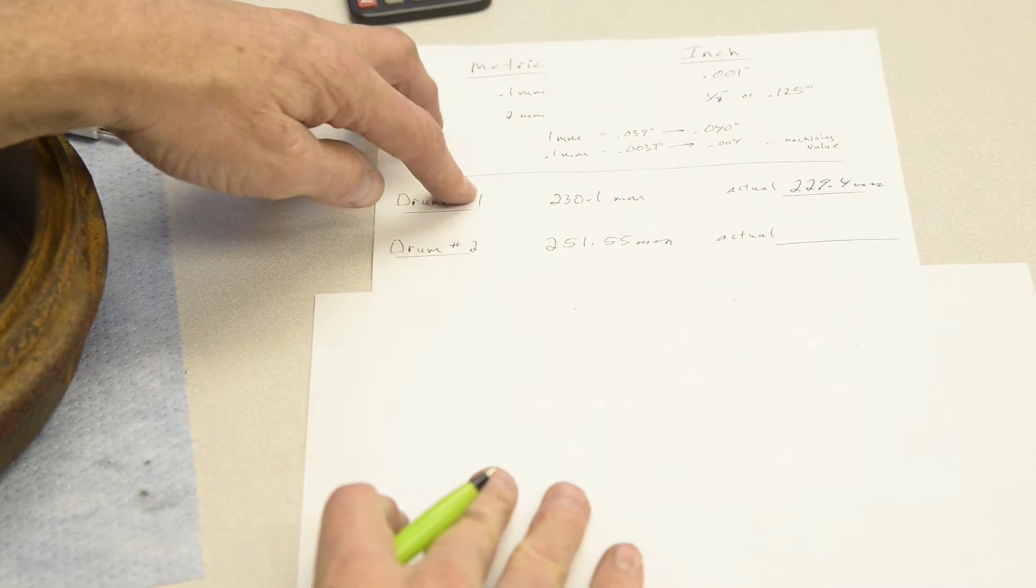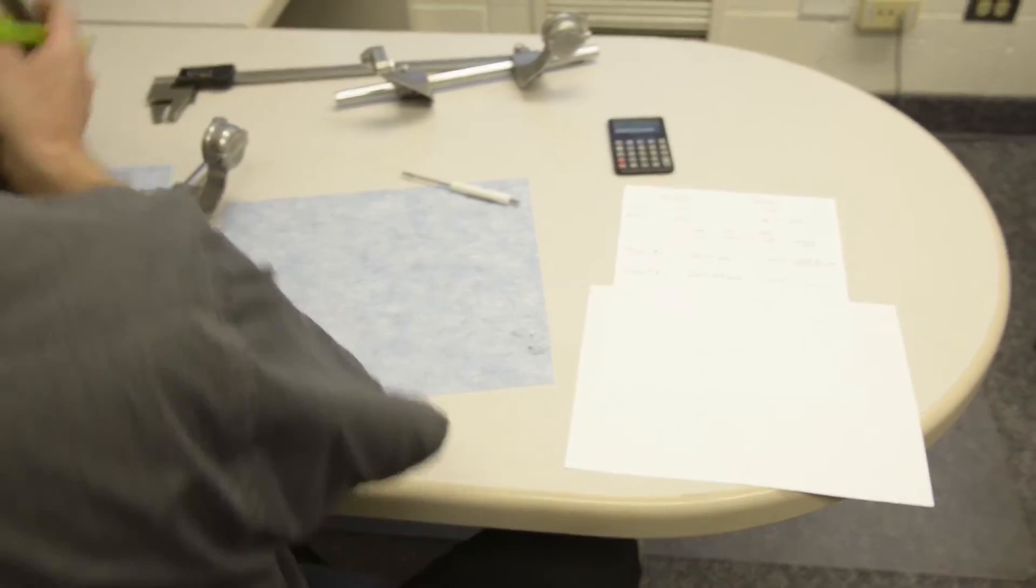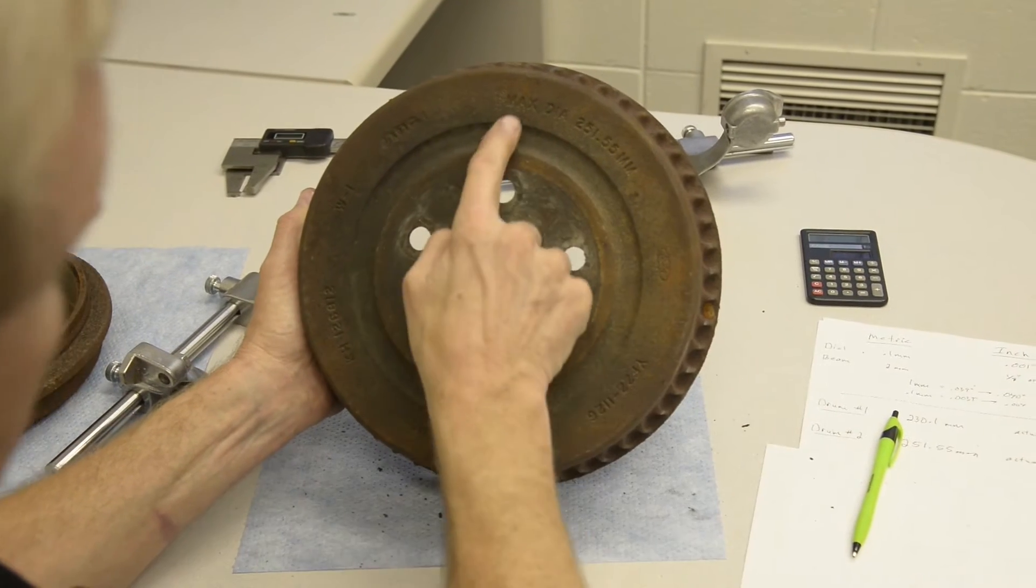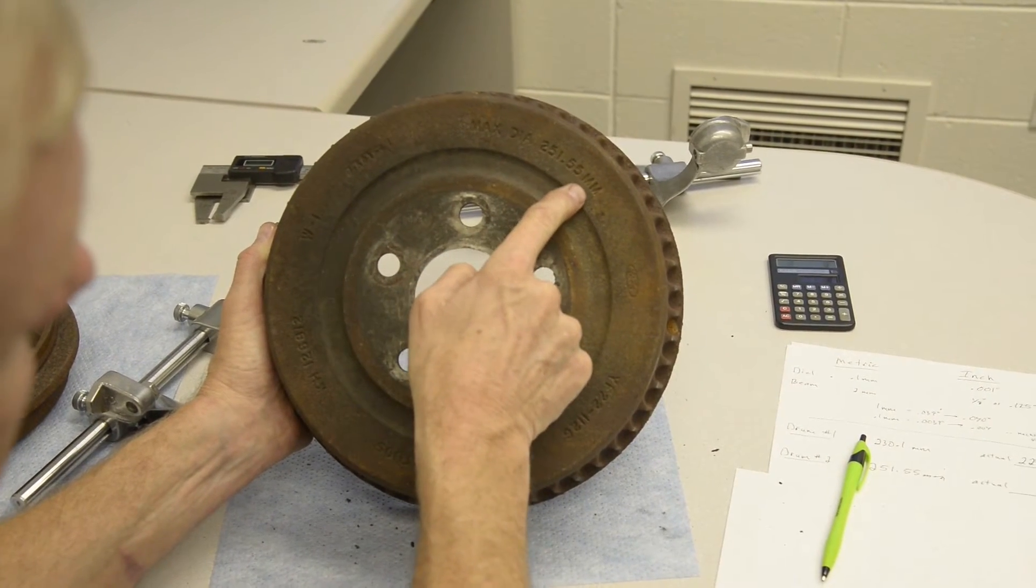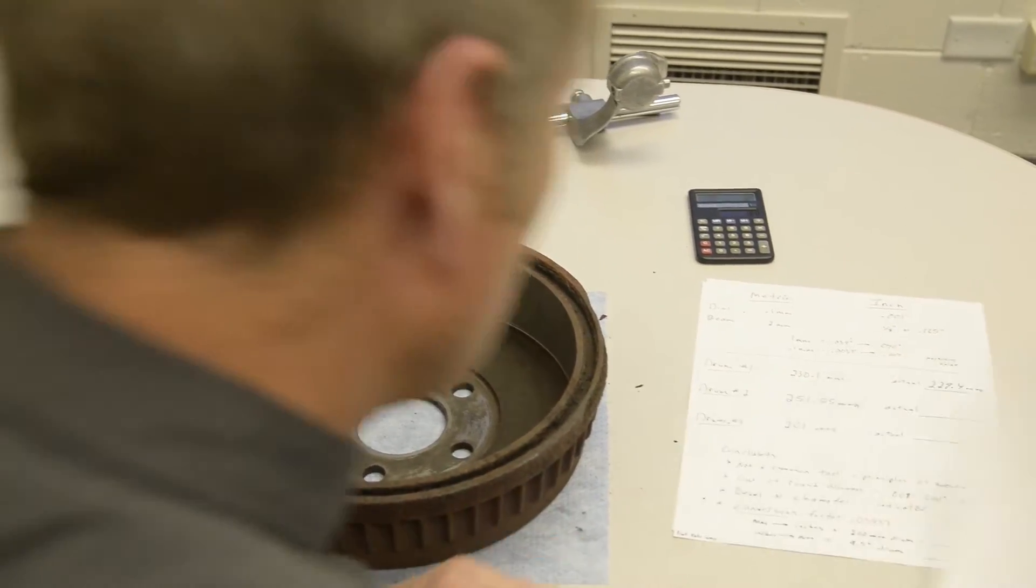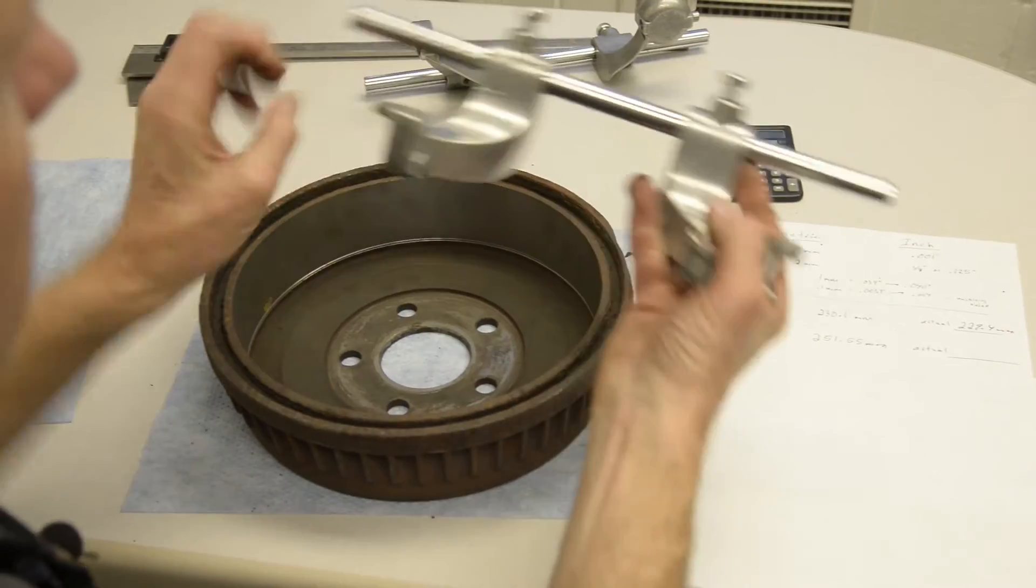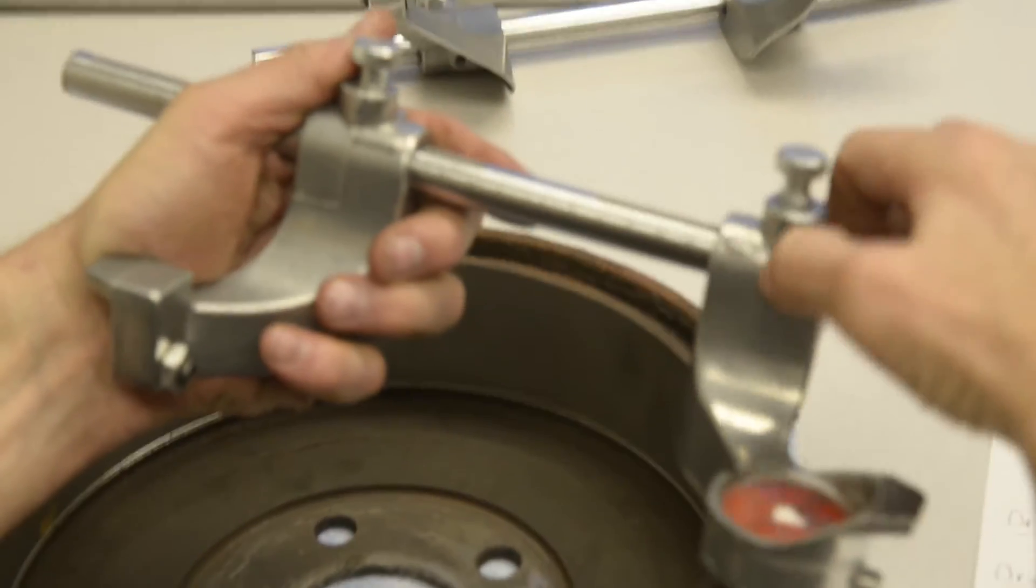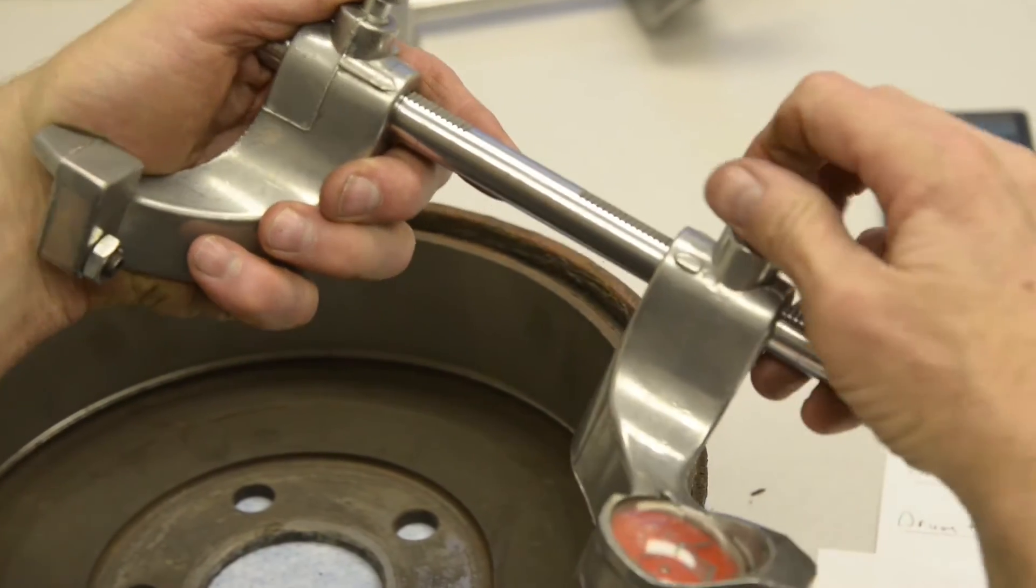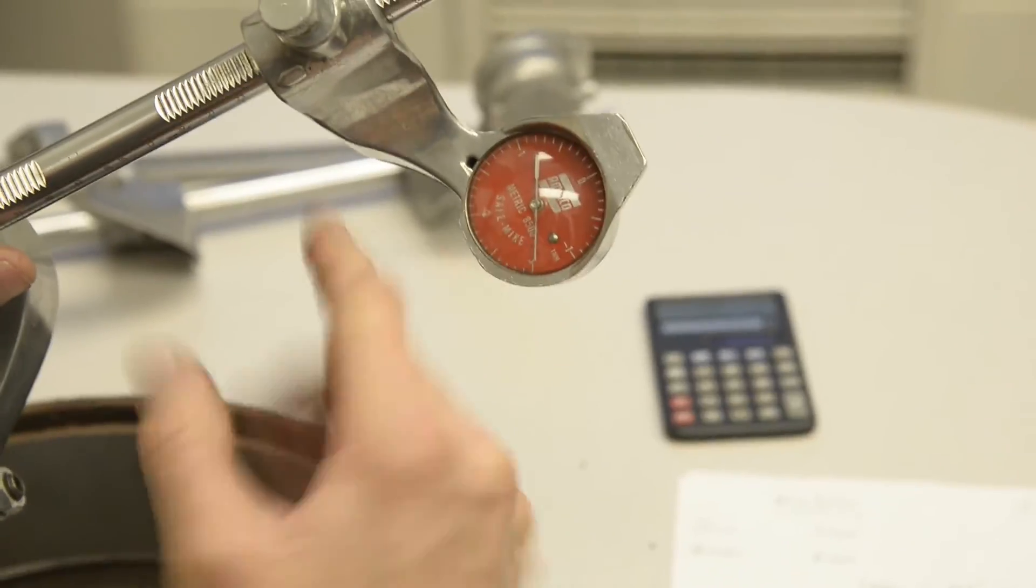Let's go do drum number two. Here's a little bigger drum. Maximum diameter is 251.55 millimeters. Let's find out its actual size. I grab my drum micrometer. I'm going to find 25 centimeters and 25 centimeters, because I'm looking for 251. This dial will measure three millimeters beyond 250.